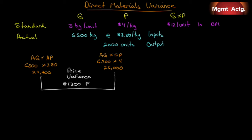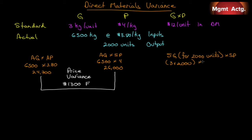We can see that: we had a standard of $4.00 per kilogram and we actually paid $3.80 per kilogram — a difference of $0.20. $0.20 times 6,500 is $1,300. For the final column, we're going to do the standard quantity for 2,000 units of output. Three kilograms per unit times 2,000 times our standard price of $4.00 is $24,000.